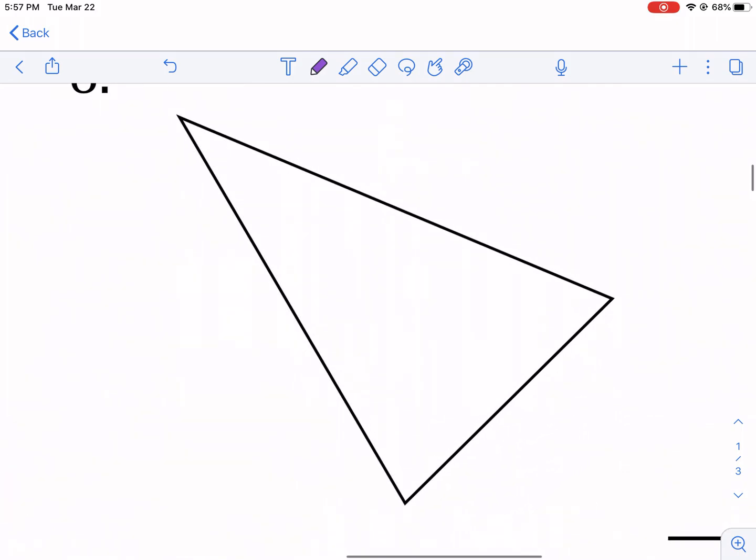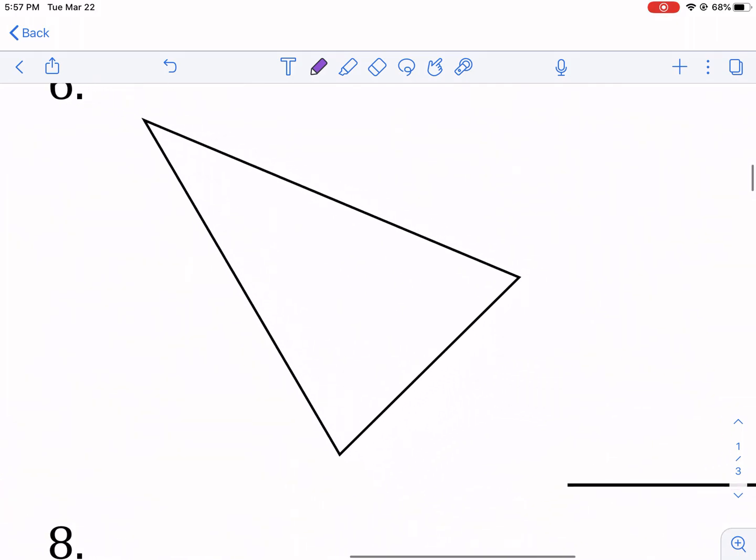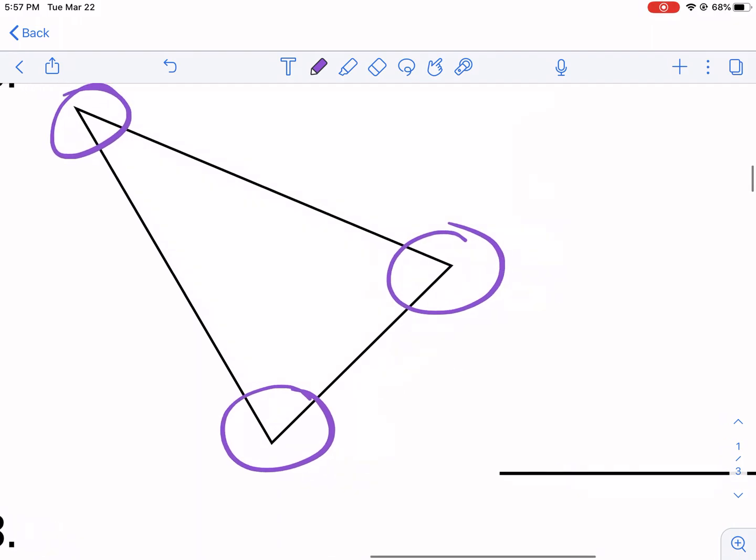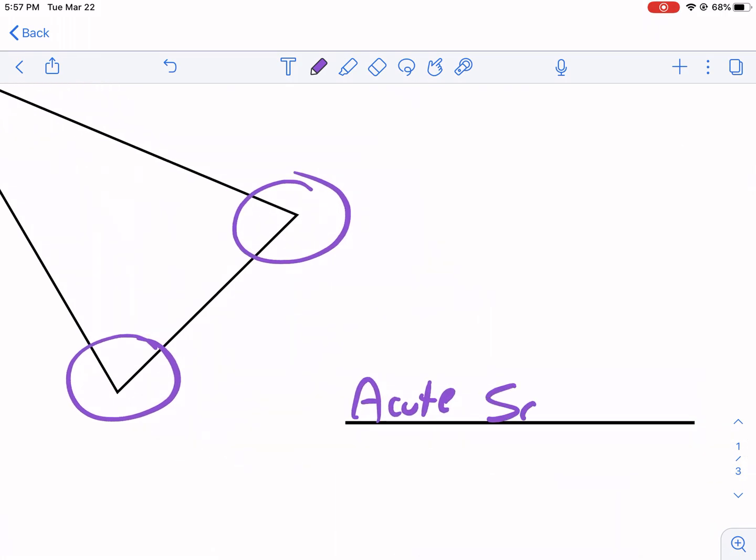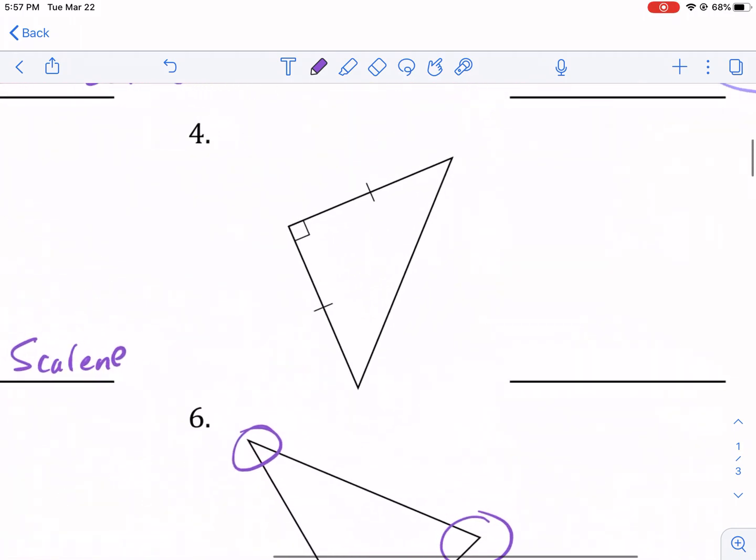And then this one, it doesn't look like we have any information. So we don't know if any of the sides are equal, but we can kind of look at the angles. We're not seeing that they're right angles and they definitely don't look obtuse where they're opening up wide. So this is acute because of that. And we don't know anything about the lengths. So we're going to call it scalene because it needs to tell us that they're equal or not.